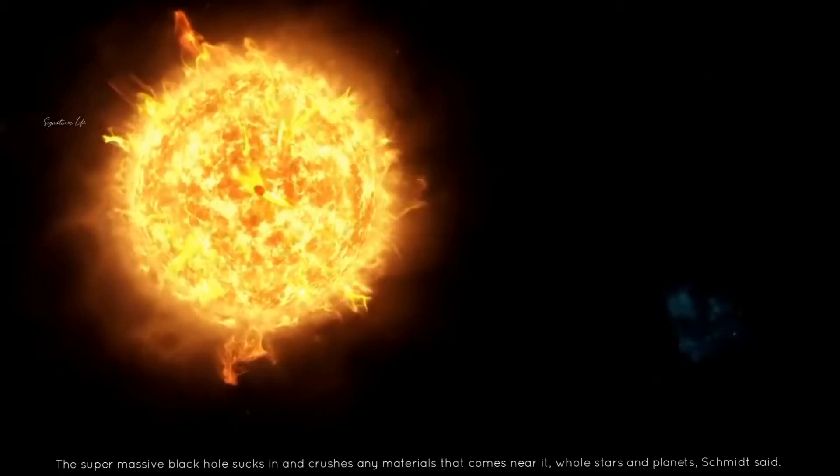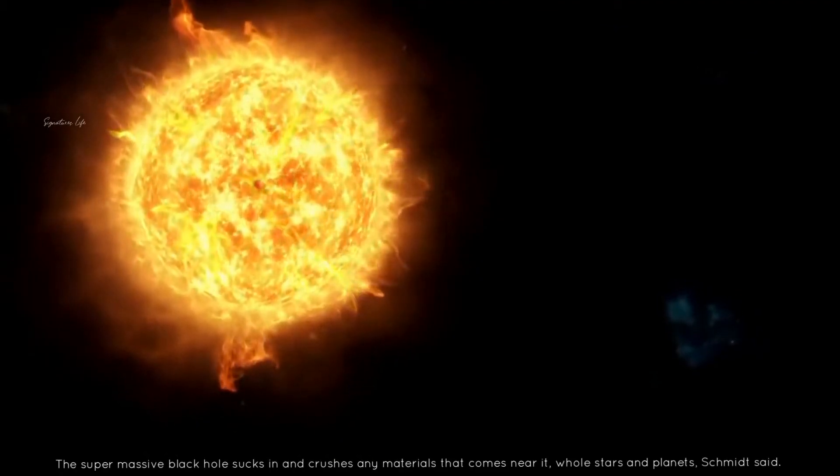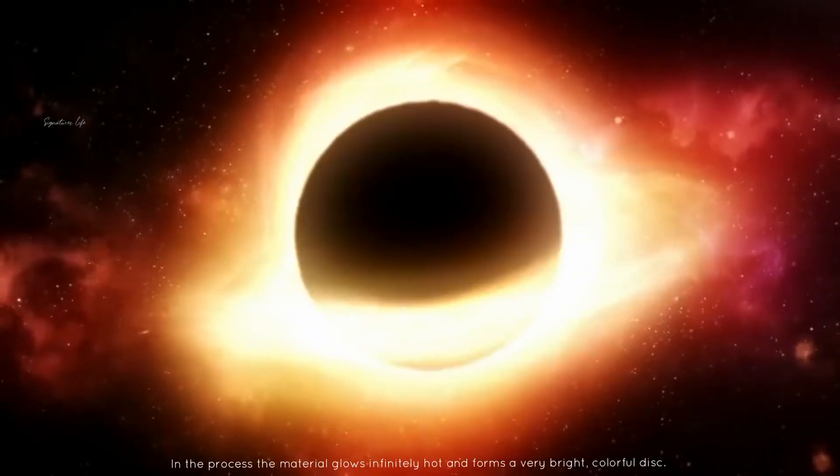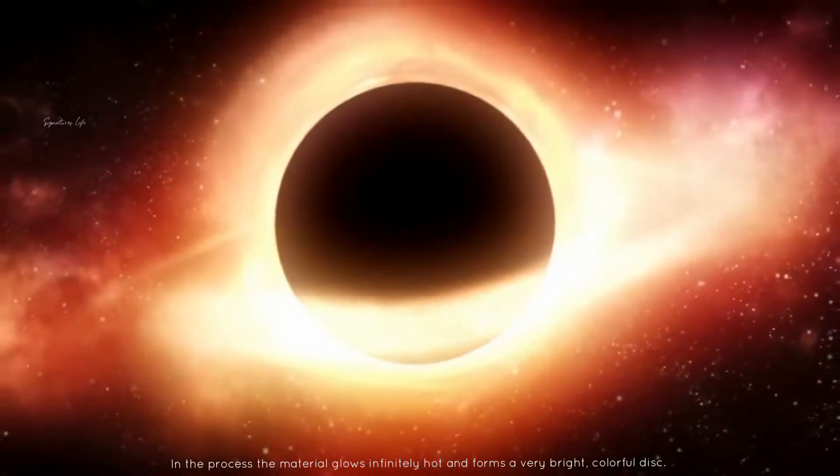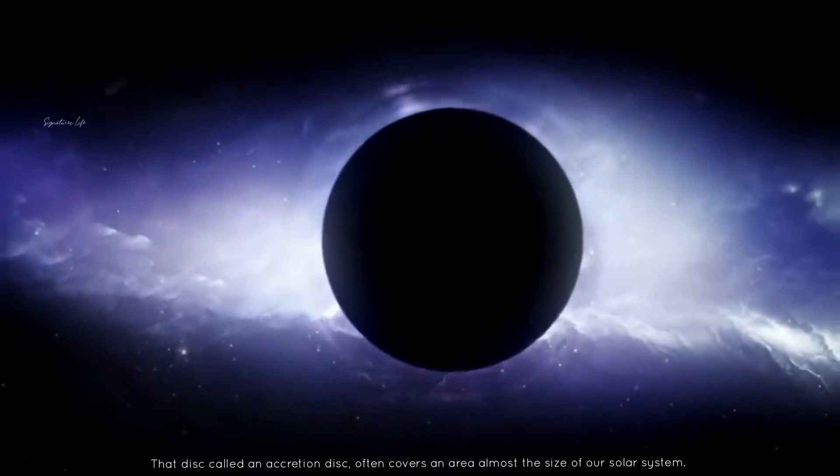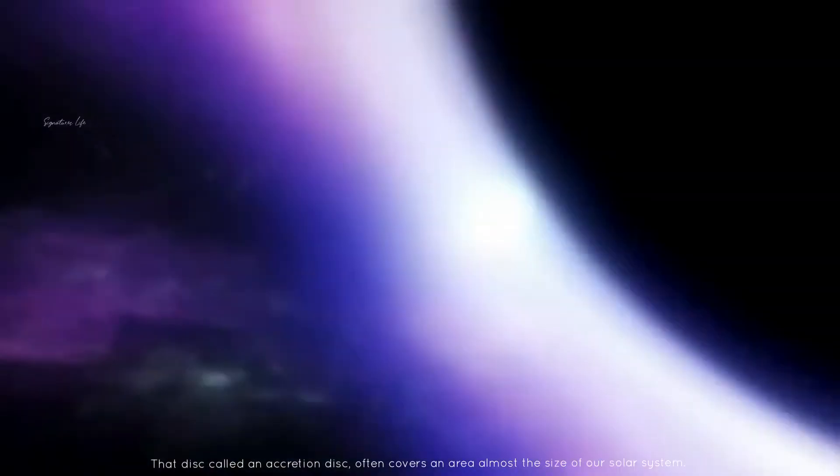The supermassive black hole sinks in and crushes any material that comes near it, whole stars and planets. In the process, the material glows infinitely hot and forms a very bright, colorful disk. That disk, called an accretion disk, often covers an area almost the size of our solar system.